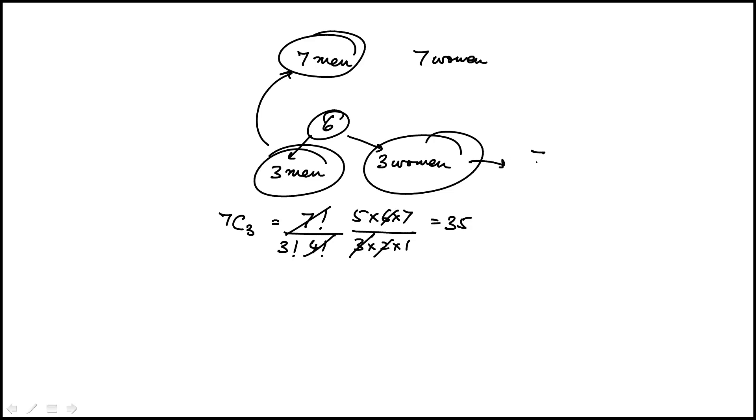We will have the same for the women as well. 7C3, we'll get the same 35. And you can see that to form a committee of six we have 35 here for men, 35 for women, and it's really just pairing them differently.